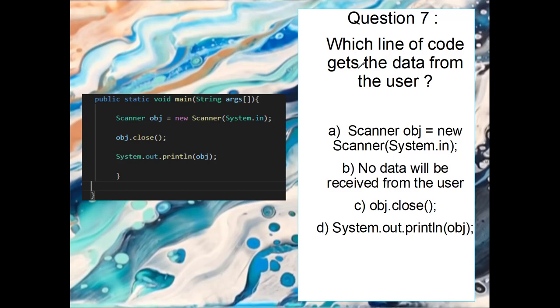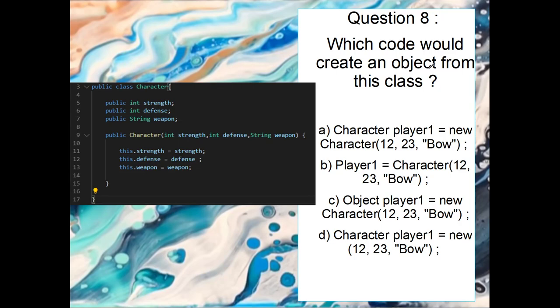Okay, question seven. Which line of code gets the data from the user? Okay, so this is an interesting one. So scanner object new, this creates the object, but it doesn't actually get the user's information. This just creates the object, so we can ask for it, so it's not that. This closes the scanner object, so it can't be that. And this prints out the information from the object, so it can't be that. What we need is we need to use a method from the object to ask the user. So in fact, no data will be received from the user. So that's the answer from question seven.